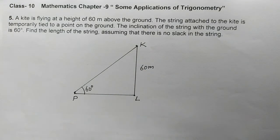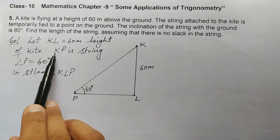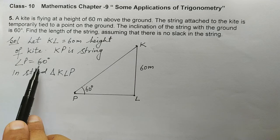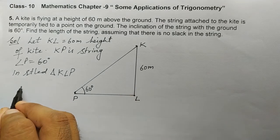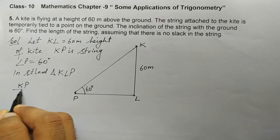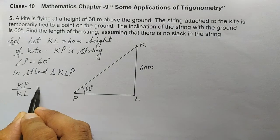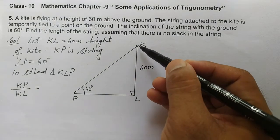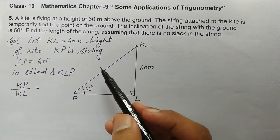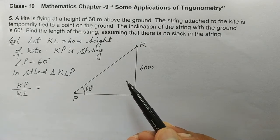Let's write what is given: KL = 60 meters (height of kite), KP is the string, angle P = 60 degrees. In right-angle triangle KLP, we have to find KP. We write KP in the numerator and KL in the denominator. KP is the hypotenuse and KL is the perpendicular, so it becomes H over P. Since P over H is sine theta, H over P will be cosecant of the angle.